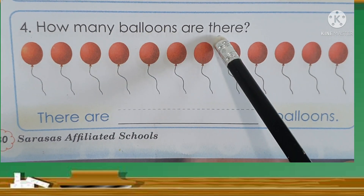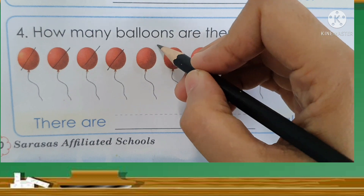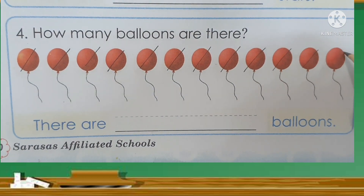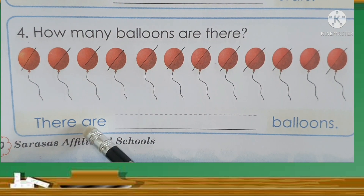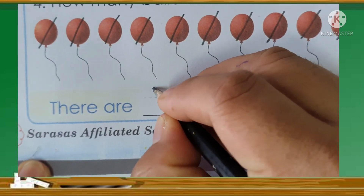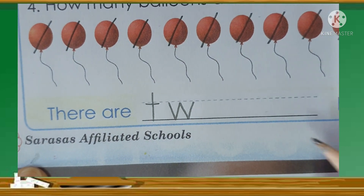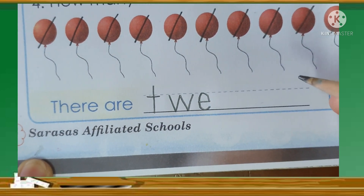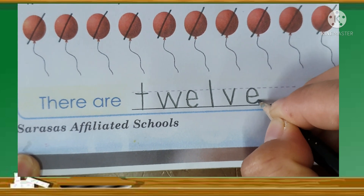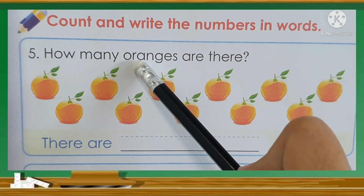Now let's go to number 4: How many balloons are there? Now let's count how many balloons. 1, 2, 3, 4, 5, 6, 7, 8, 9, 10, 11, 12. So there are 12 balloons. Now we will write the word 12: T-W-E-L-V-E. There are 12 balloons.